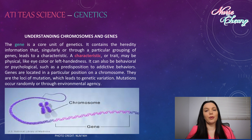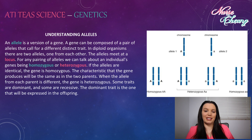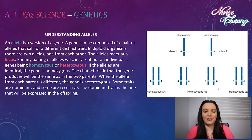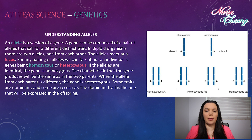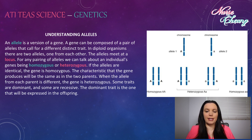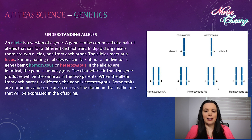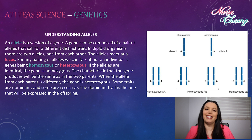An allele is a version of a gene. A gene can be composed of a pair of alleles that call for a different distinct trait. In diploid organisms, there are two alleles, one from each parent. The alleles meet at a locus. For any pairing of alleles, we can talk about the individual's genes being homozygous or heterozygous. If the alleles are identical, the gene is homozygous, and the characteristic will be the same as in both parents. When the allele from each parent is different, the gene is heterozygous. Some traits are dominant and some are recessive — the dominant trait is the one that will be expressed in the offspring.